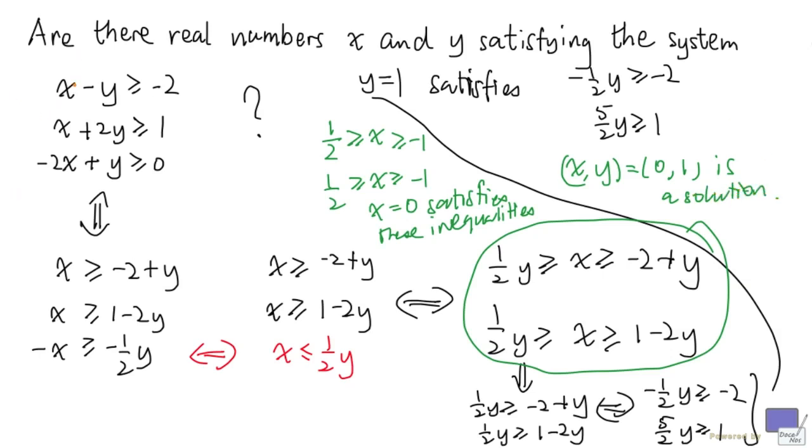And let's check that this is the case. So I have 0 minus 1, that's minus 1, and minus 1 certainly is greater than minus 2. And 0 plus 2 times 1, that's 2, that's bigger than 1. And finally, I have 0 plus 1, that's greater than 0.